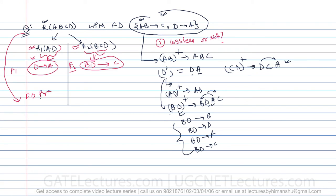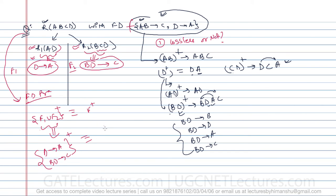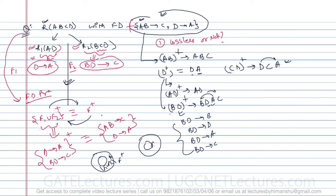So F1 = {D→A} and F2 = {BD→C}. For the decomposition to be FD preserving, (F1 union F2) closure must be equivalent to F closure. Here (F1 union F2) closure gives us {D→A, BD→C}, which should be equivalent to the original {AB→C, D→A}. To confirm equivalence, each set must cover the other.